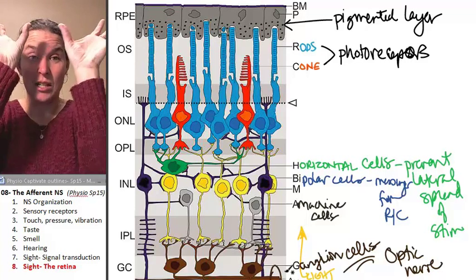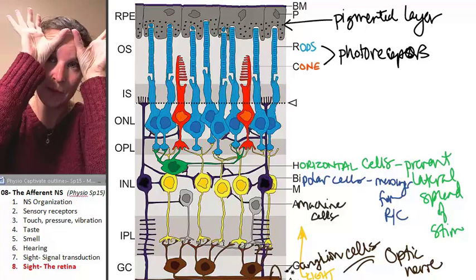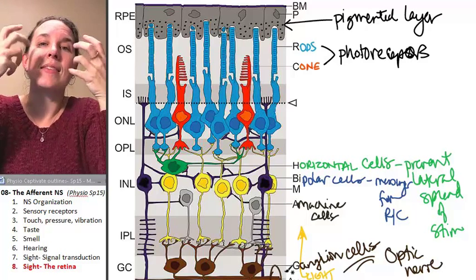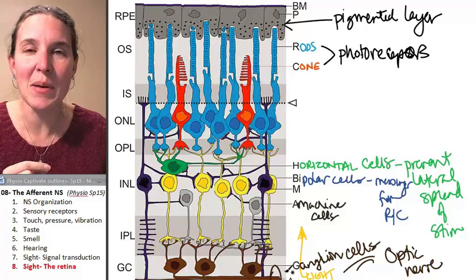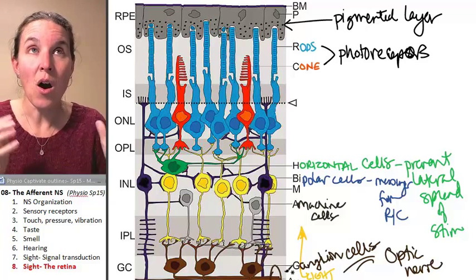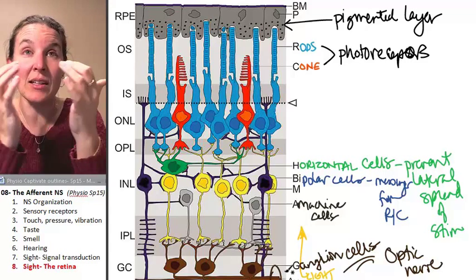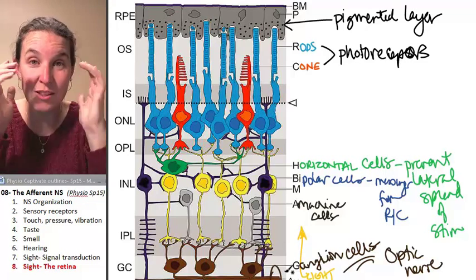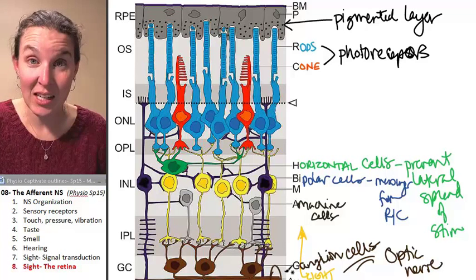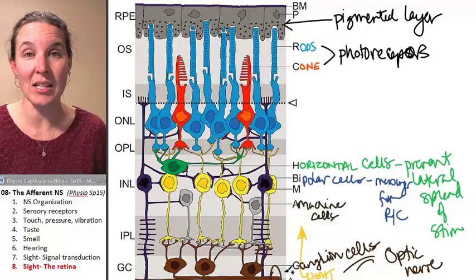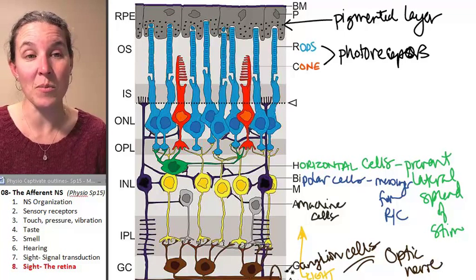They get information. Come on, everybody. Tell me what's up. And then they take that information. Their axons become the optic nerve. All the axons from all the ganglion cells in the retina converge on the optic disc and become the optic nerve and exit the eyeball. And that's how the information gets to the brain.